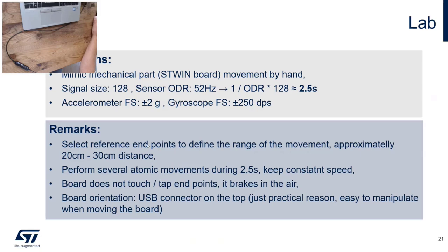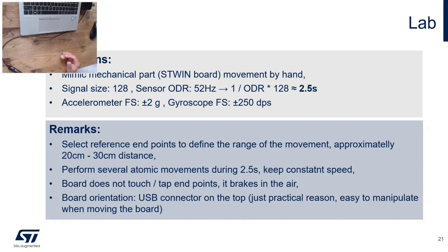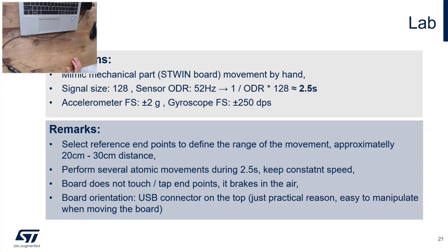It is good practice to select reference endpoints to define the range of movement — approximately 20–30 cm distance. For example, you can use particular keys on your keyboard or the size of the PC. The next suggestion is to perform several atomic movements during one signal period of 2.5 seconds, keeping constant speed — for example, a consistent tempo. In practice, I'm able to fit three movements within one signal.